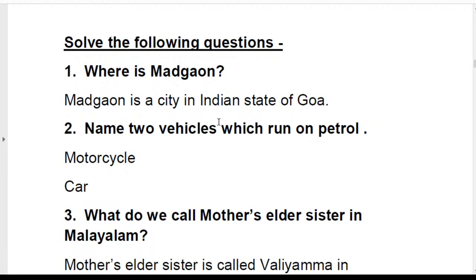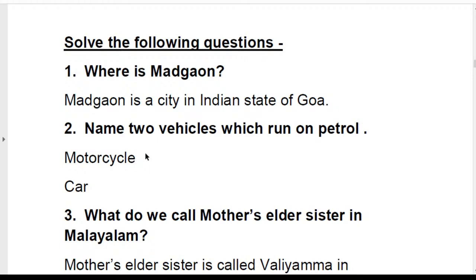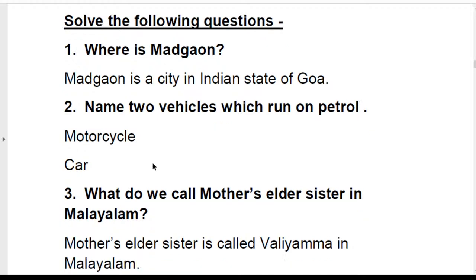Let us quickly revise: Where is Madgao? Madgao is a city in the Indian state of Goa. Now, question: name two vehicles which run on petrol. The answers are motorcycle and car. You can also write scooter — that is also correct. These are common vehicles that run on petrol.